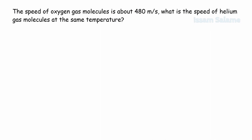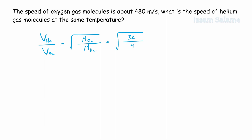Exercise 1: The speed of oxygen gas molecules is about 480 m/s. What is the speed of helium gas molecules at the same temperature? Using Graham's Law: rate of He / rate of O₂ = square root of (molar mass of O₂ / molar mass of He) = square root of (32 / 4) = square root of 8 = 2.83.